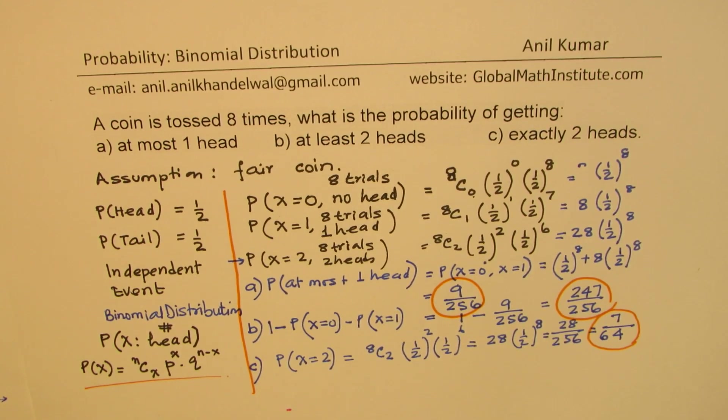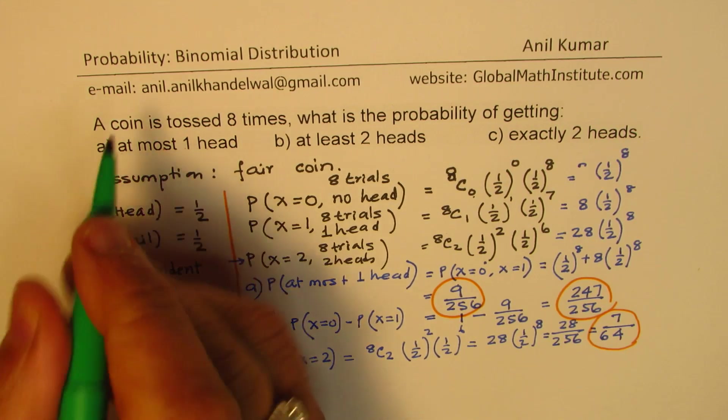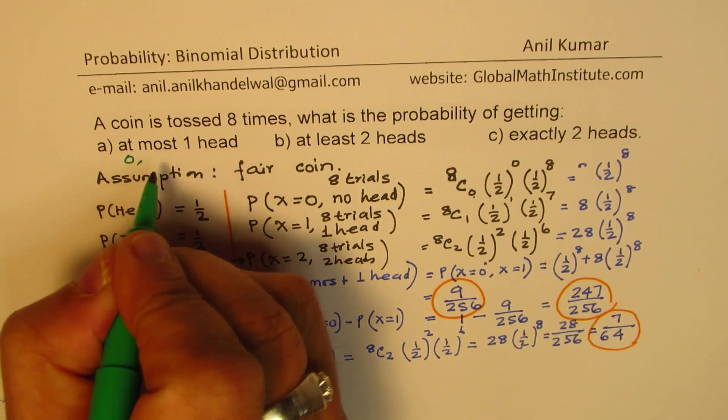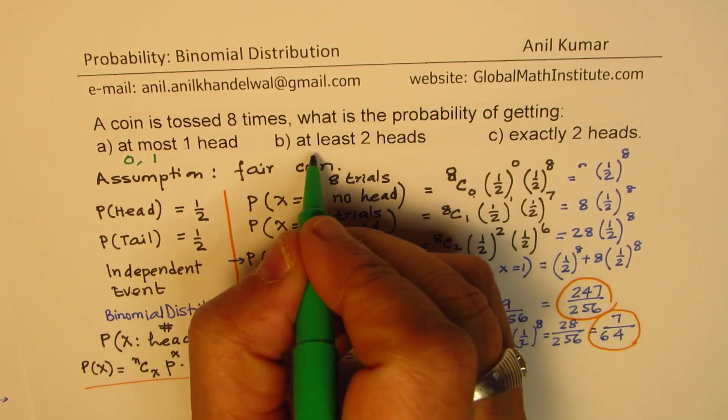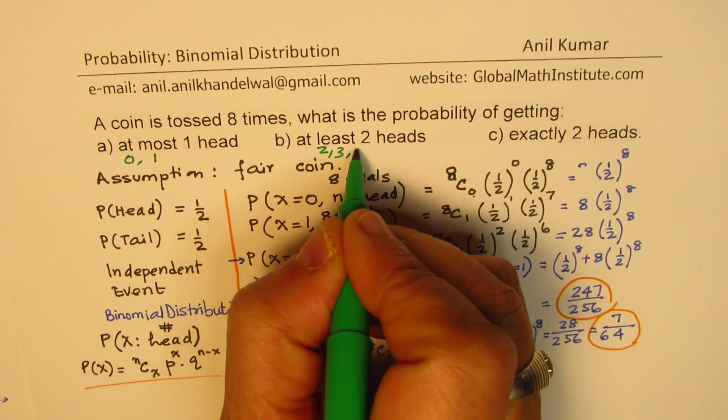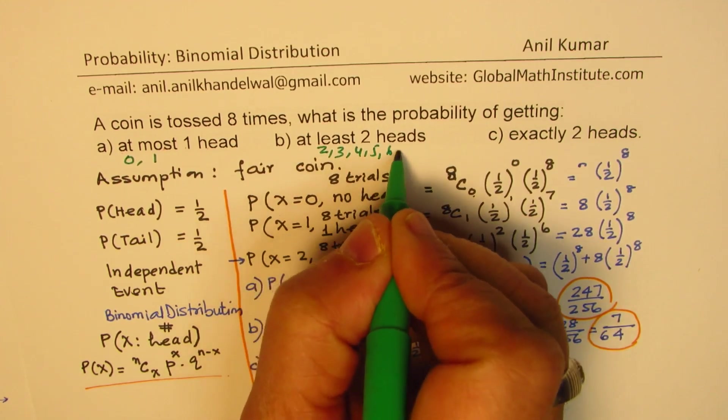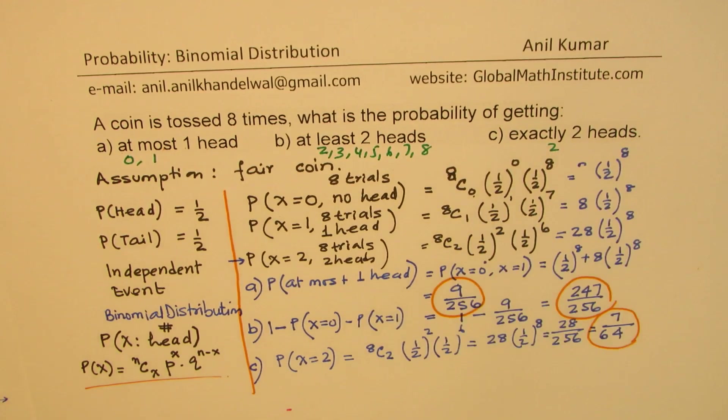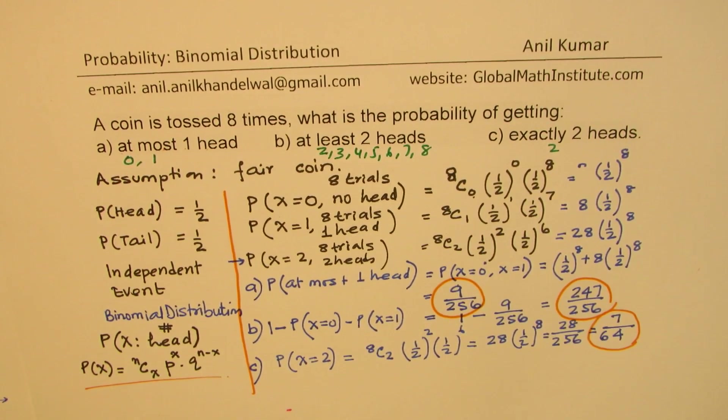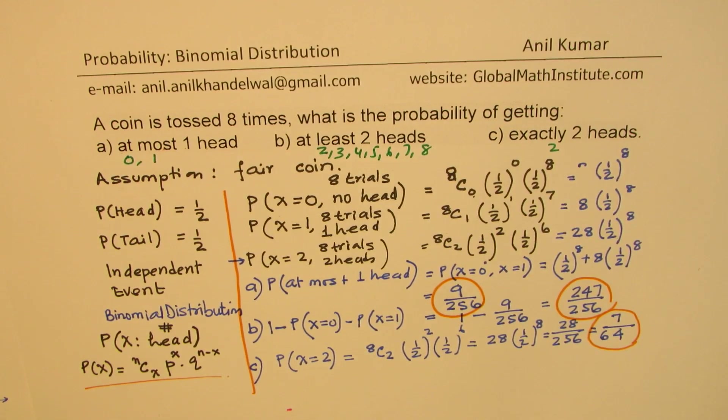Perfect. So I hope you understand. And with this, you also understand the terms. At most one head means, basically, we are looking for 0 or one head. At least two heads means 2, 3, 4, 5, 6, 7, or 8. And exactly two means just two. So those are the cases which we worked for. So I hope the concept is absolutely clear.